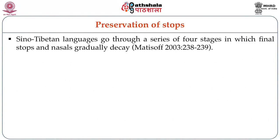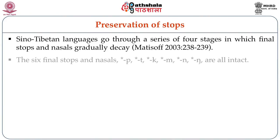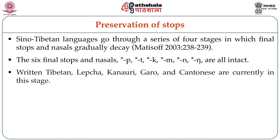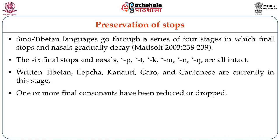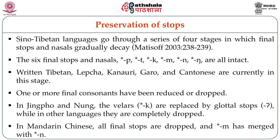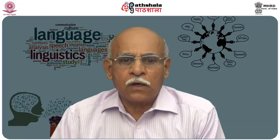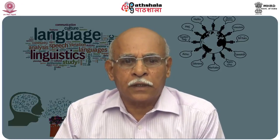Sino-Tibetan languages go through a series of four stages in which final stops and nasals gradually decay, as per Matisoff. In the first stage, the six final stops and nasals are all intact — Written Tibetan, Lepcha, Kanori, Garo and Cantonese are currently in this stage. In the second stage, one or more final consonants have been reduced or dropped: in Jingpho and Nung, the velars are replaced by glottal stops, while in other languages they are completely dropped. In Mandarin Chinese, all final stops are dropped and -m has merged with -n.